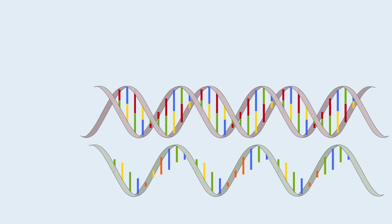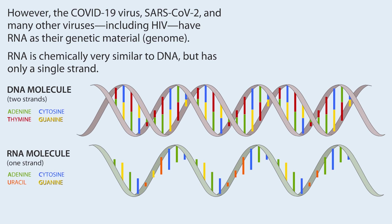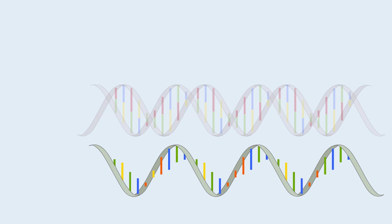However, the COVID-19 virus, SARS-CoV-2, and many other viruses, including HIV, have RNA as their genetic material, or genome. RNA is chemically very similar to DNA, but has only a single strand.